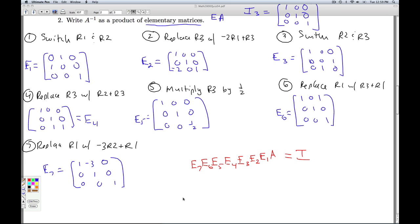So A inverse then has to be the product of these elementary matrices. Why? Because there is only one inverse. Inverses are unique. We proved that in class. And so A inverse is equal to this product of elementary matrices in this order, and here are the elementary matrices.